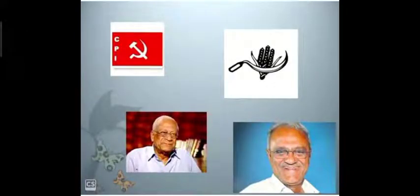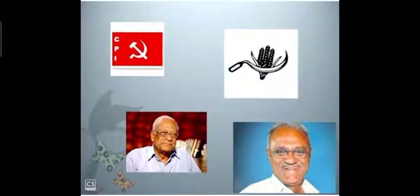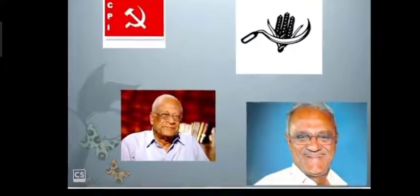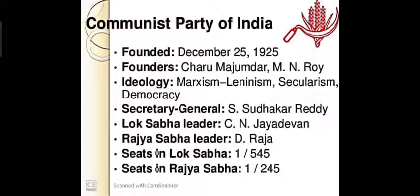This slide is about the Communist Party of India. You can see the symbol of the Communist Party — a sickle and grain — and photos of Charu Majumdar and M.N. Roy. The Communist Party of India was founded on December 25, 1925, before independence.